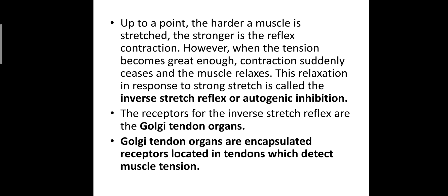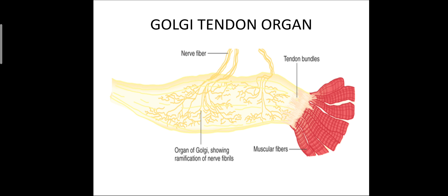Golgi tendon organs are the encapsulated receptors. They are located in the tendons and detect the muscle tension. In this slide, you can see the figure of Golgi tendon organs — the nerve fiber, tendon bundles, muscular fibers, and the organ of Golgi showing the ramification of nerve fibrils.